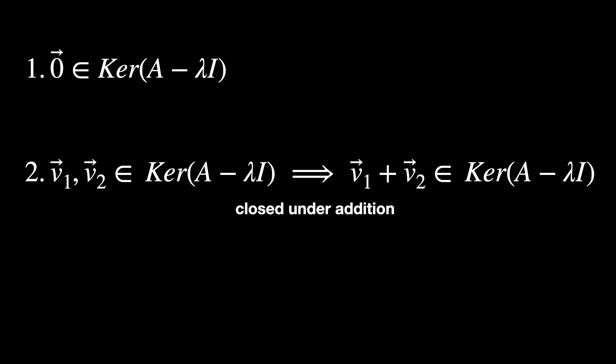The second, if you choose two random vectors in the kernel, then adding the first vector with the second vector produces another vector that still lives in the kernel. In other words, it is closed under addition.